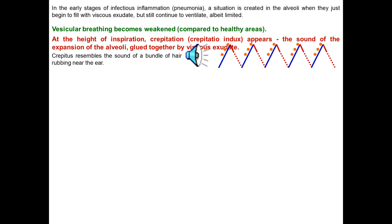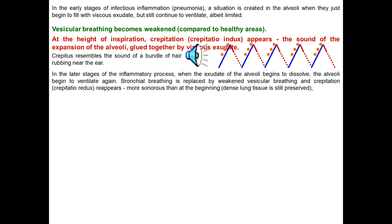Crepitation sounds like a bundle of hair rubbing near the ear. In the later stages of the inflammatory process, when the exudate in the alveoli begins to dissolve, the alveoli begin to ventilate again; bronchial breathing is replaced by weakened vesicular breathing and crepitation reappears, more sonorous than at the beginning. So: at the beginning of pneumonia — weakening of vesicular sound and crepitation; in the middle stage — consolidation with bronchial sound and sometimes added rales; and in the last stage — crepitation and weakening of vesicular sound again.